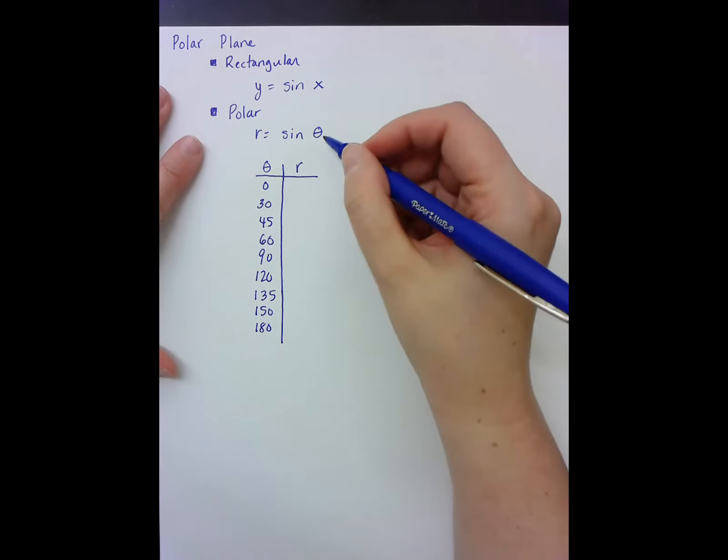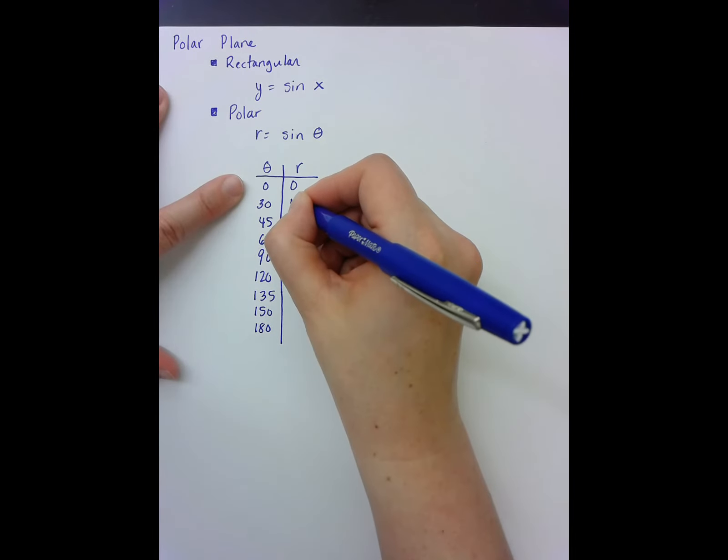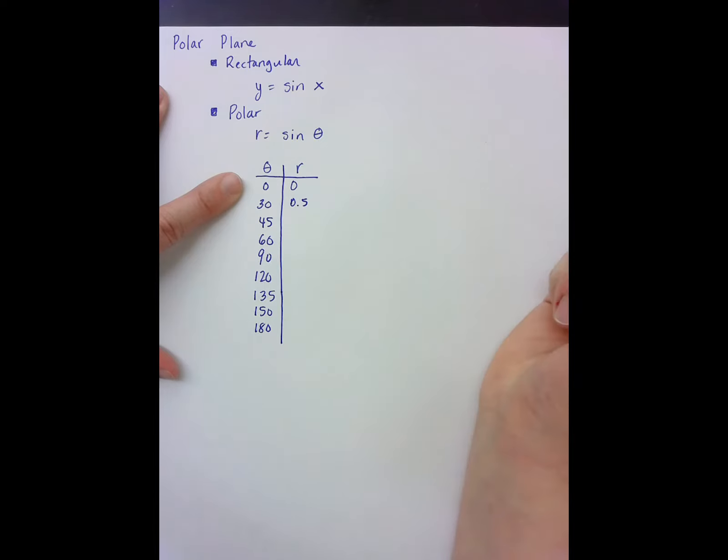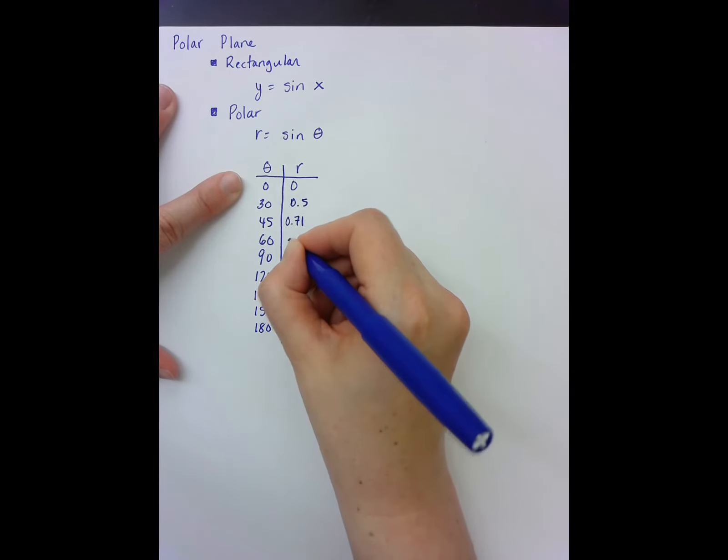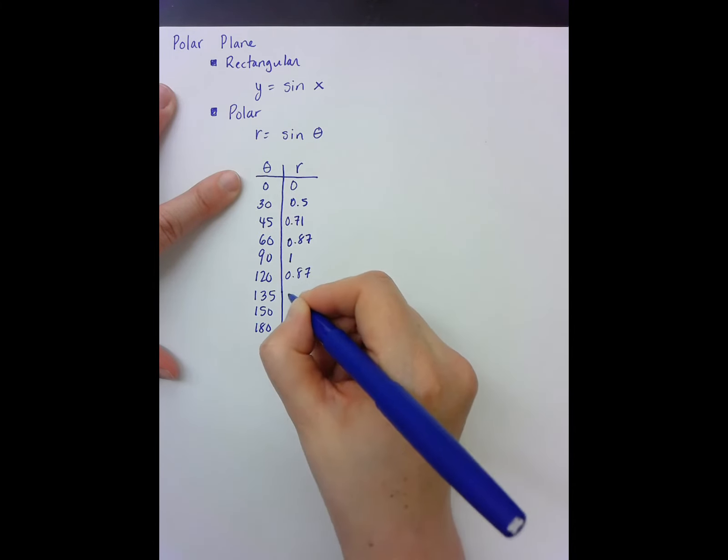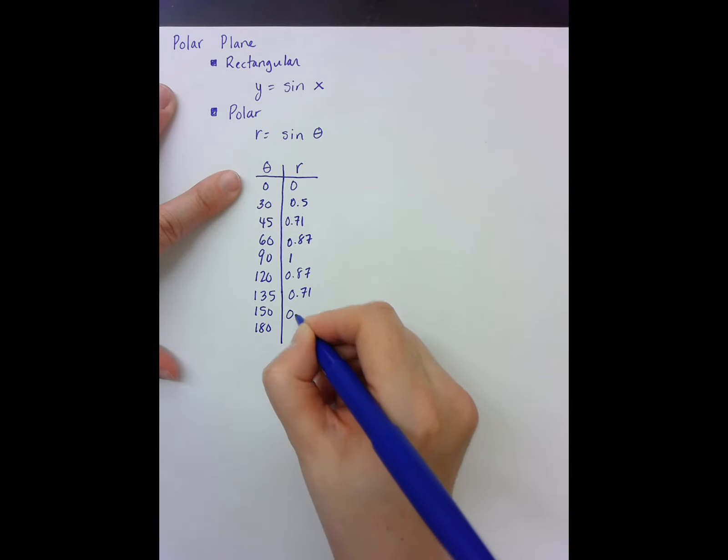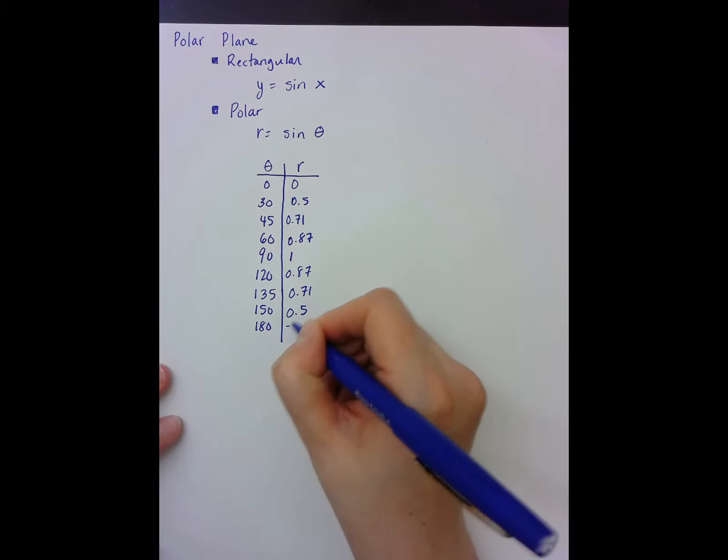When I put into my calculator sine of zero, I get zero. I'm going to use the decimal approximations here: 0.5, 0.71, 0.87, 1, 0.87, 0.71, 0.5, negative 1.